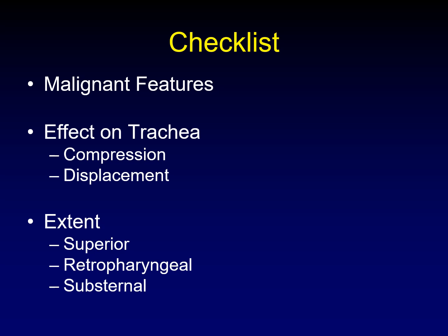There are several things you need to be looking for when you are interpreting a preoperative CT of the neck for a thyroid mass. One is to look for malignant features of the mass. We want to know what effect the mass is having on the trachea — how far it is displaced and how much it is compressed. We want to know the extent of the mass: how far superiorly it extends, whether there's retropharyngeal extension, and most importantly, whether there is substernal extension.